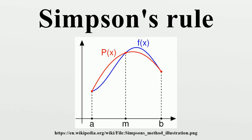The error of this method is, where ξ is some number between a and b. Thus, the 3/8 rule is about twice as accurate as the standard method, but it uses one more function value.